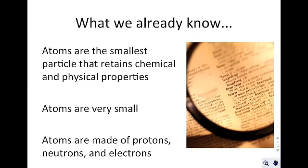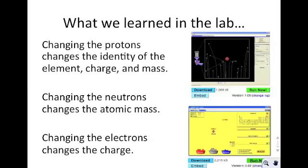What we already know: atoms are the smallest particle that retain chemical and physical properties — you should know that from middle school. Atoms are very small, and atoms are made of protons, neutrons, and electrons. What you learned in the lab is that changing the protons changes the identity of the element, the charge, and the mass. Changing the neutrons changes only the mass, and changing the electrons changes the charge. You should have also had some experience with the atomic models, firing different types of light and seeing what happens to the various models of the atom.